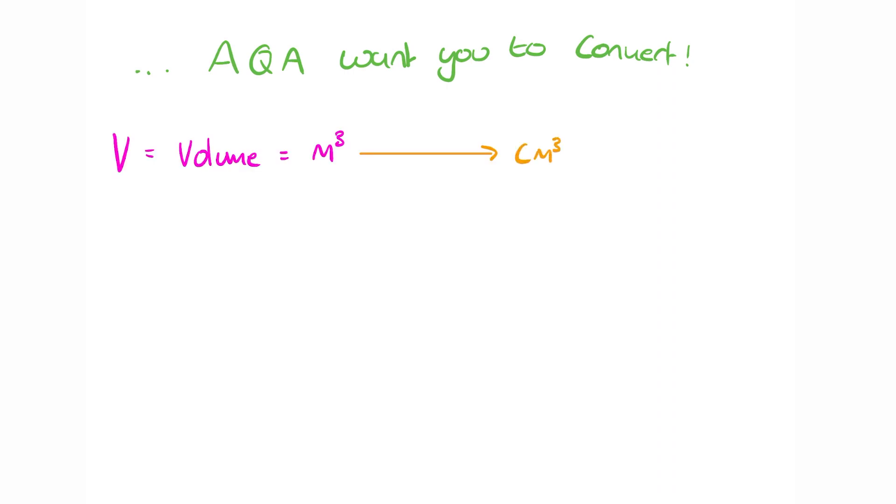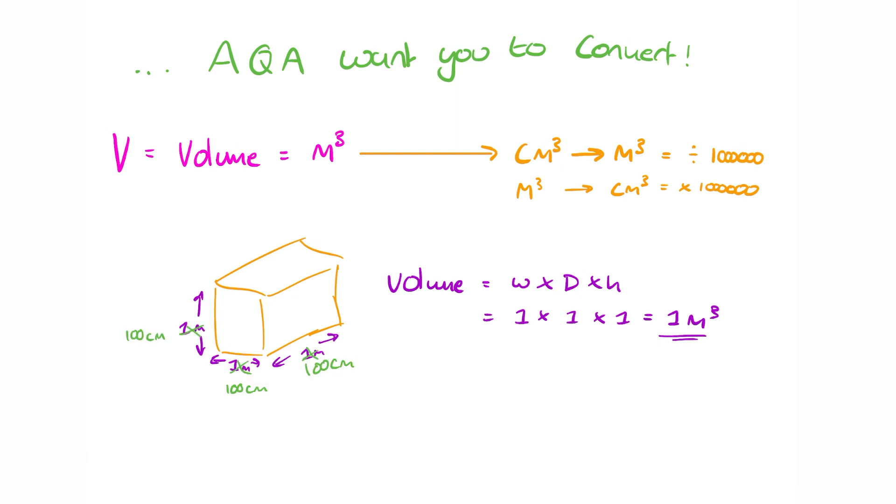Let's start with volume. To go from centimeters cubed to meters cubed, you divide by a million. To go from meters cubed back to centimeters cubed, you multiply by a million. The best way to understand this is to have an imaginary box with one meter width, depth, and height. The volume is one times one times one, which is one meter cubed. But if we convert those meters into centimeters on each side, 100 centimeters being one meter, you end up doing a hundred times a hundred times a hundred. And would you look at that, you end up with a million centimeters cubed.